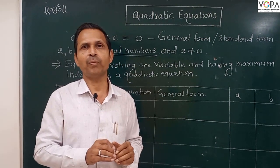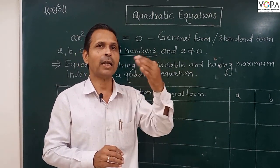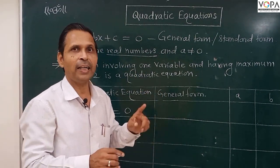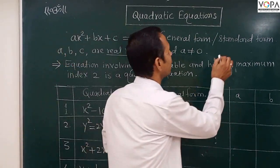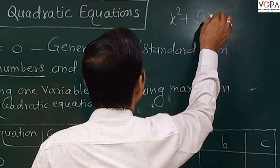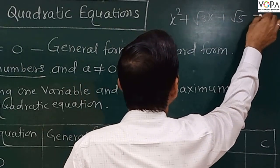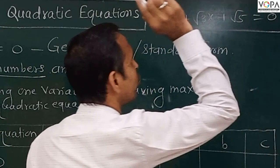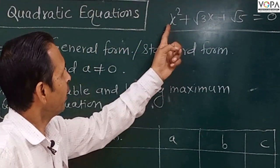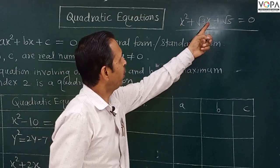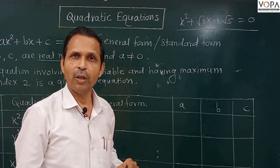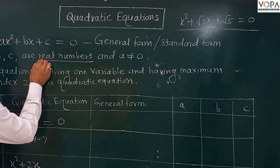Irrational numbers such as √3, √2, 2√2 — these are irrational numbers, and they are also included in real numbers. That's why if we write an equation like x² + √3·x + √5 = 0, this is also a quadratic equation. Here a = 1, b = √3, and c = √5, and these are all real numbers.